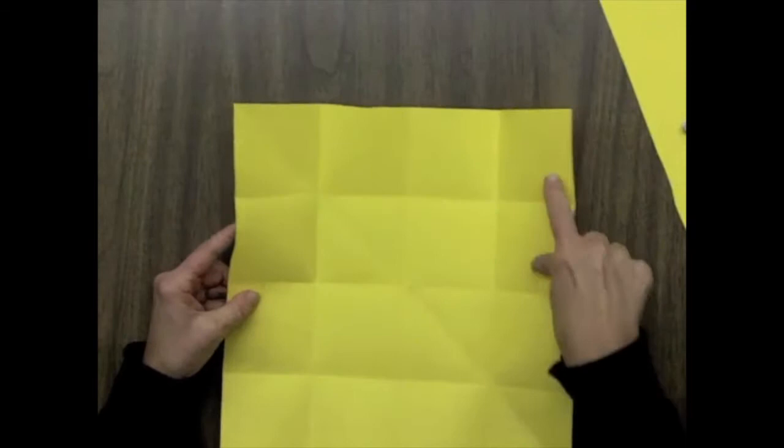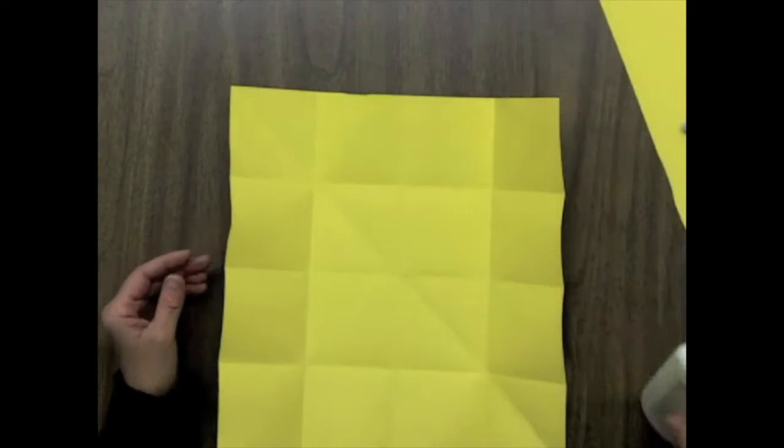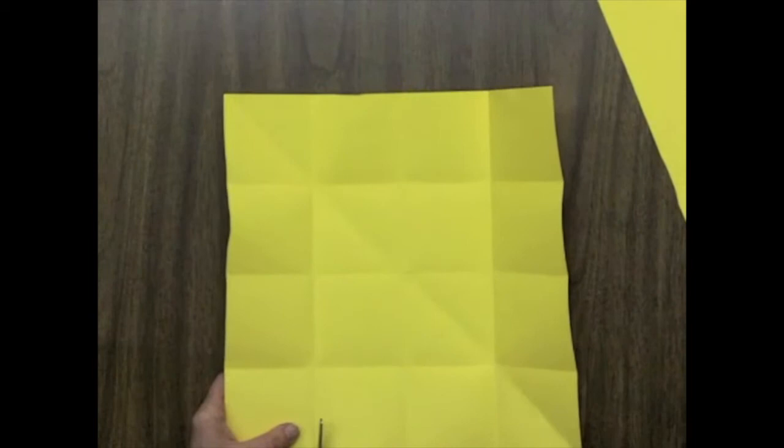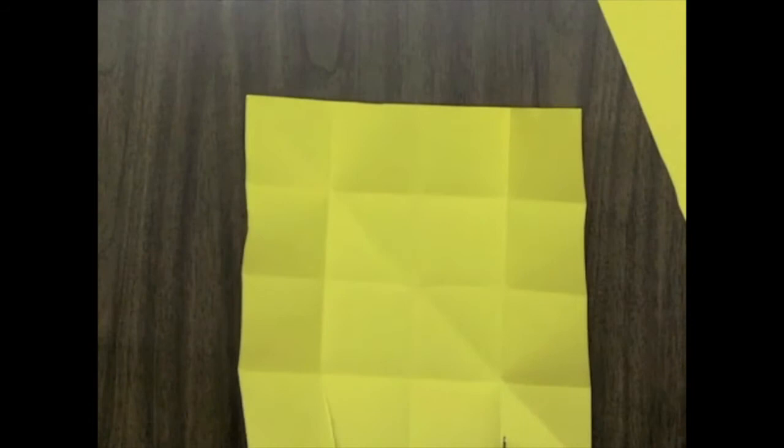So you're going to end up with 16 squares. Well, these are just a reference, and to help you be able to bend this into a box. Now the first thing you're going to do is you're going to cut from the edge down one of these creases to the crease that intersects it.